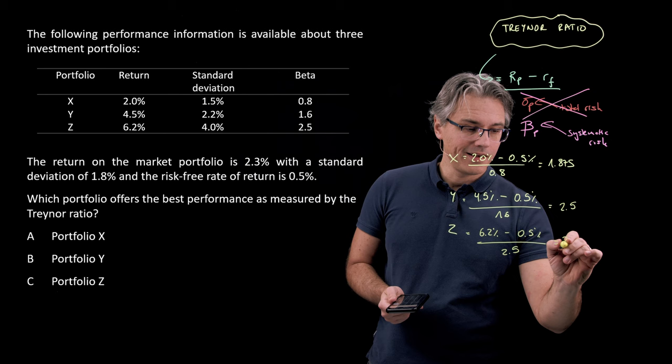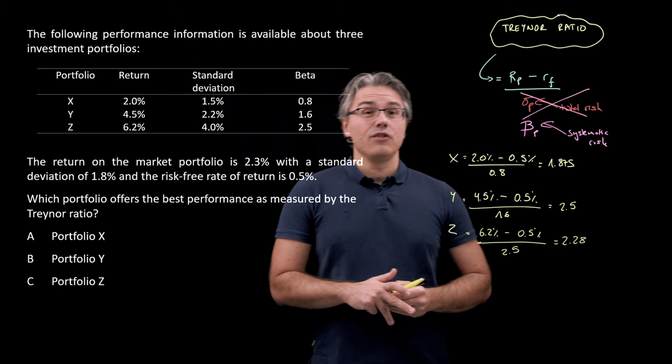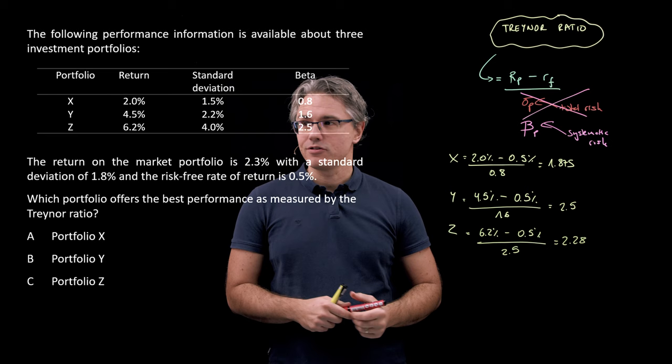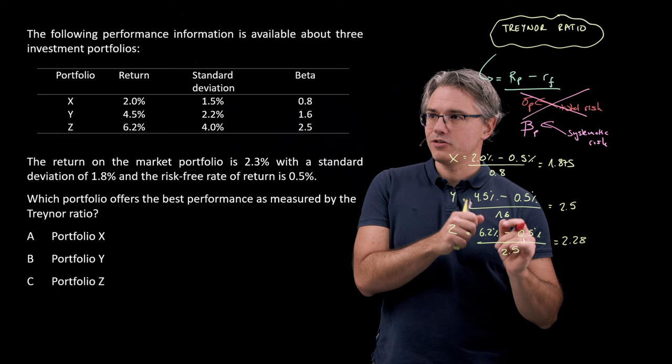Right, so which one is going to be the best? Well, you want to have the optimal, the highest amount of excess return for the risk being taken. So we want to maximize this relationship, and the portfolio which offers the best performance as measured by the Treynor ratio is going to be the one with the highest Treynor ratio. That's portfolio Y, and this therefore gives us very clearly answer B.